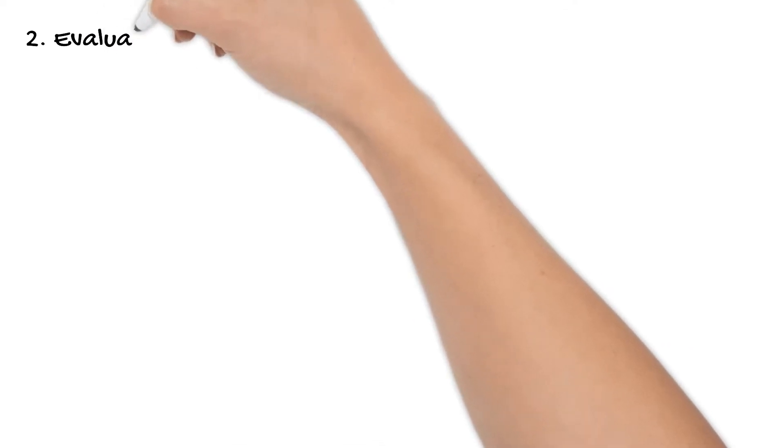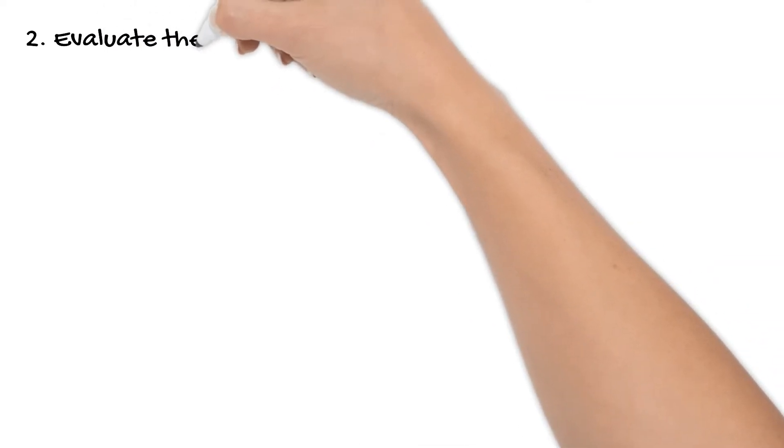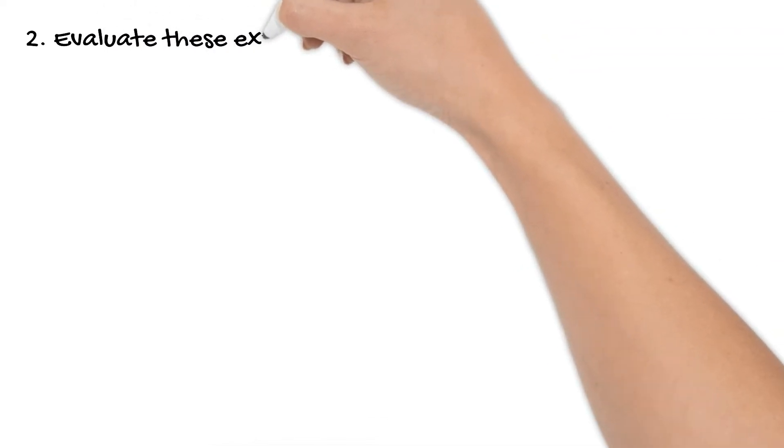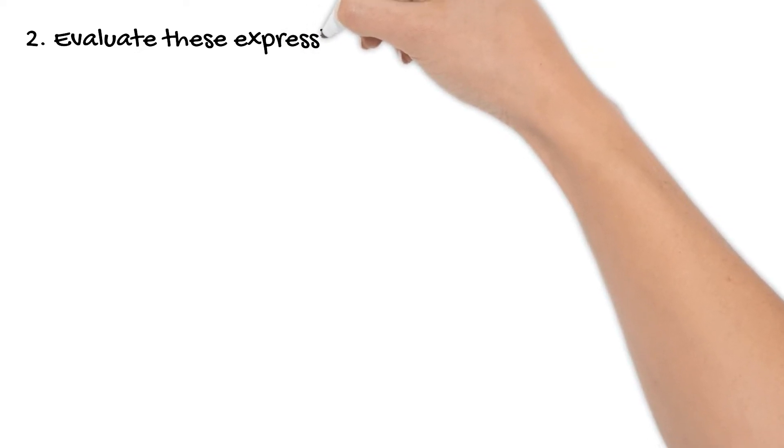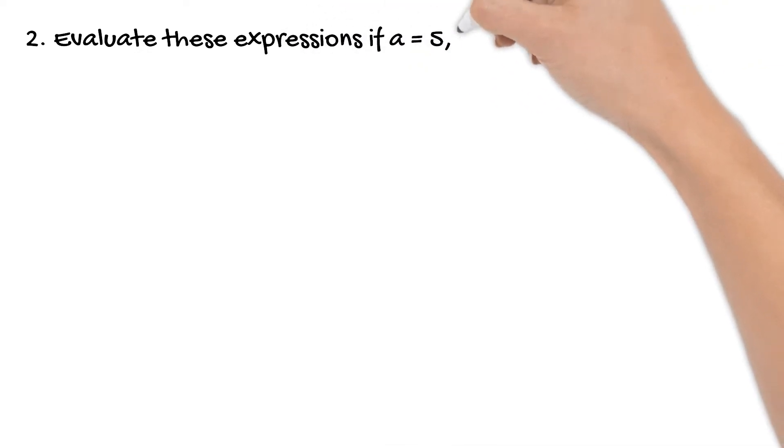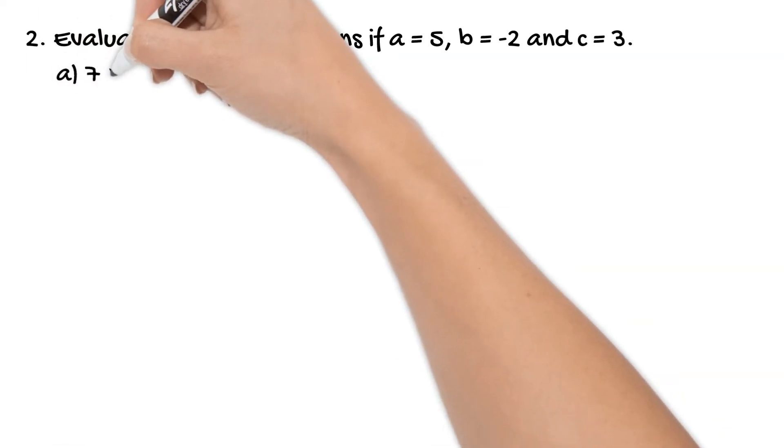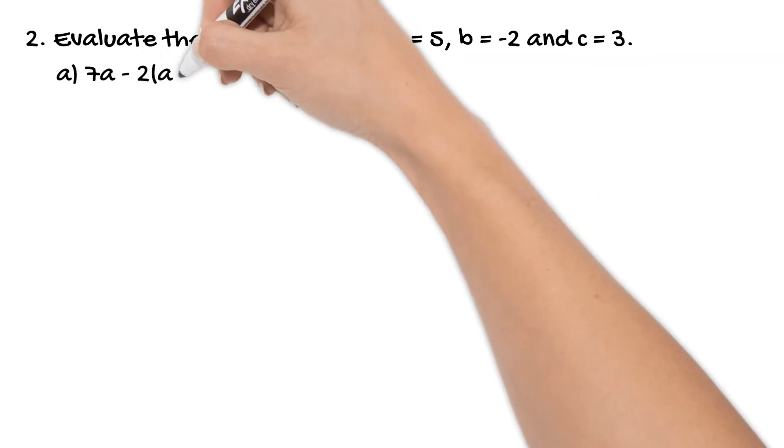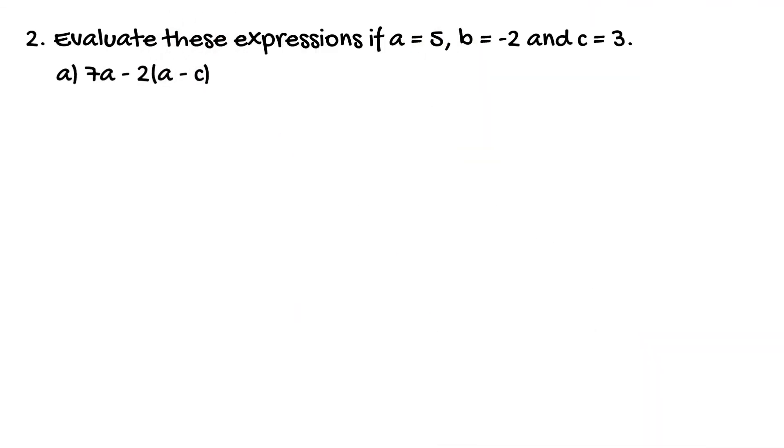Then we'll need to substitute. So if we're substituting we're given a value for each pronumeral and then we need to insert that into the given expression. So our first expression is 7a minus 2 outside of a minus c. So then we take our values for a and c and we put them in the place of those two pronumerals.